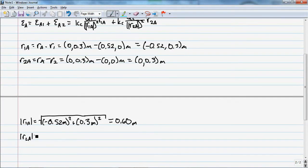And R2A, well this is going to be easy because one is 0 and the other one is just going to be squared and then the square root. So that's going to be 0.3 meters.